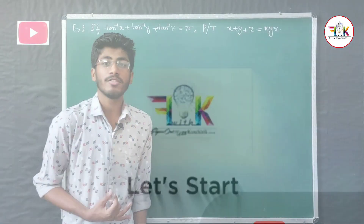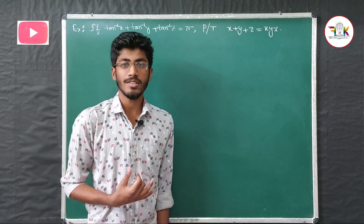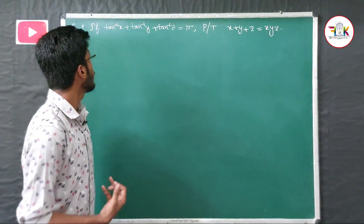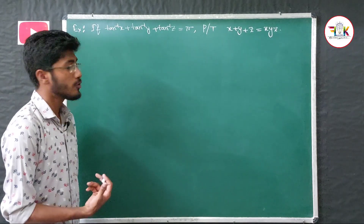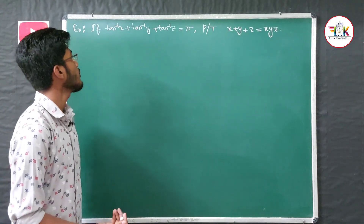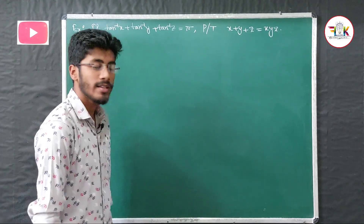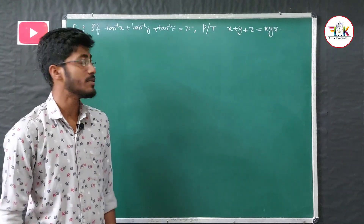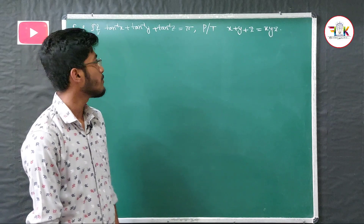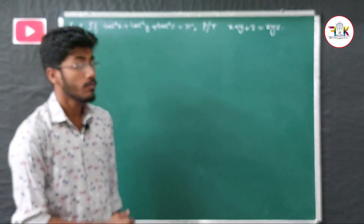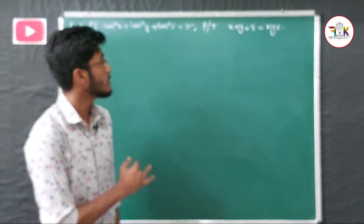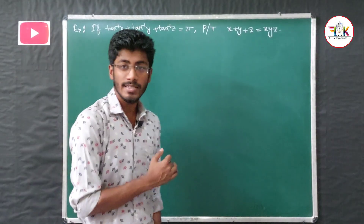Come to the first question of this video. The question is: if tan⁻¹x + tan⁻¹y + tan⁻¹z equals π, then prove that x + y + z equals xyz.